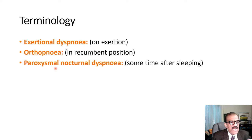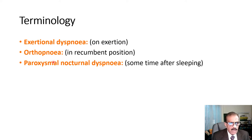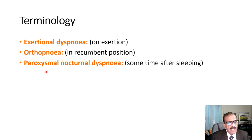How do we know if a patient has orthopnea or paroxysmal nocturnal dyspnea? You need to listen to the patient — allow the patient to tell the details of the dyspnea and they will give you the typical history. In some respiratory diseases dyspnea may also be aggravated in the lying position, but mostly these two symptoms are suggestive of left heart failure.